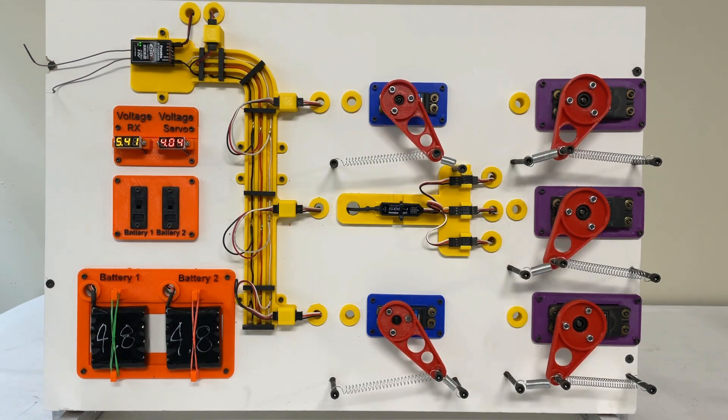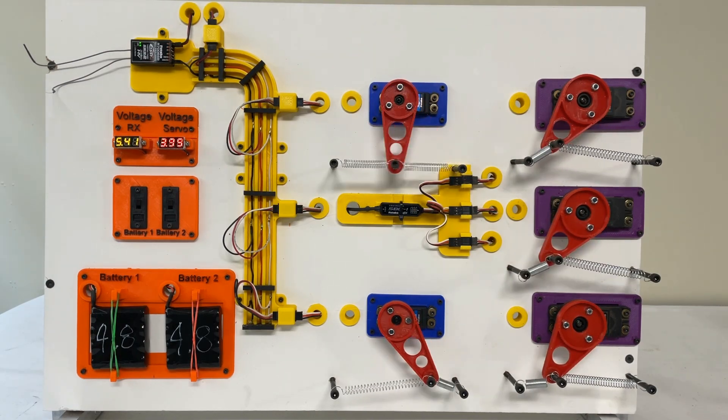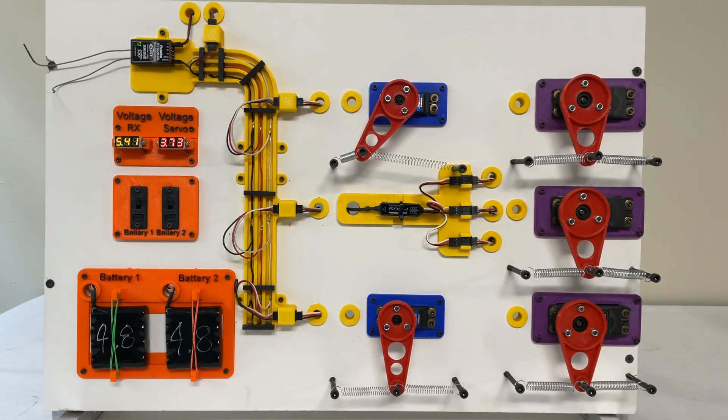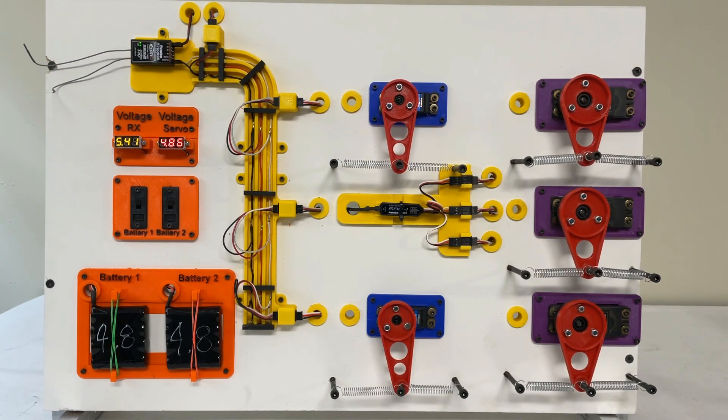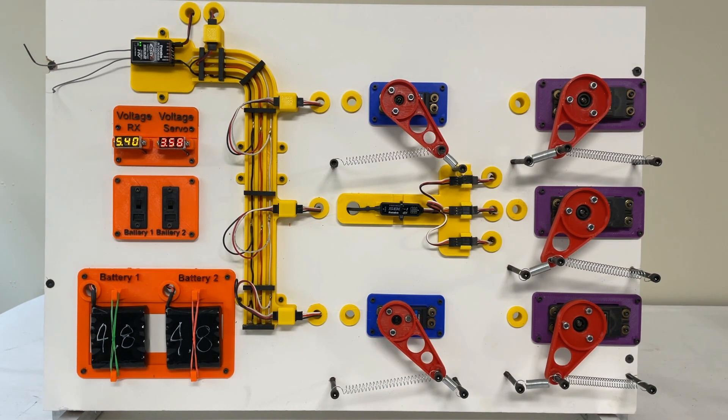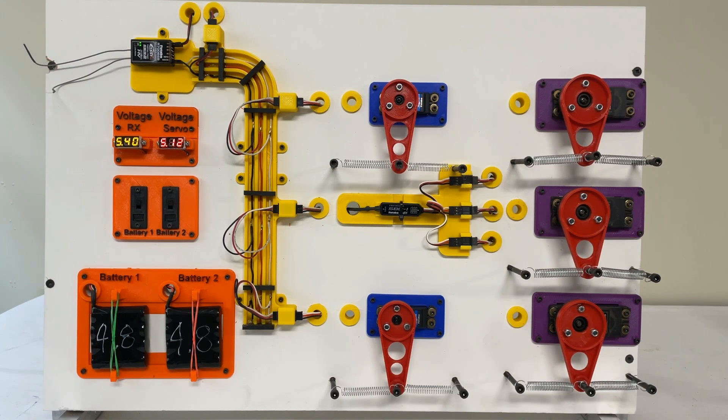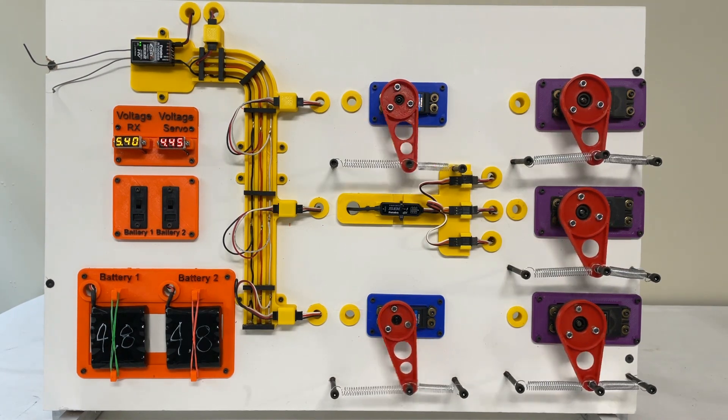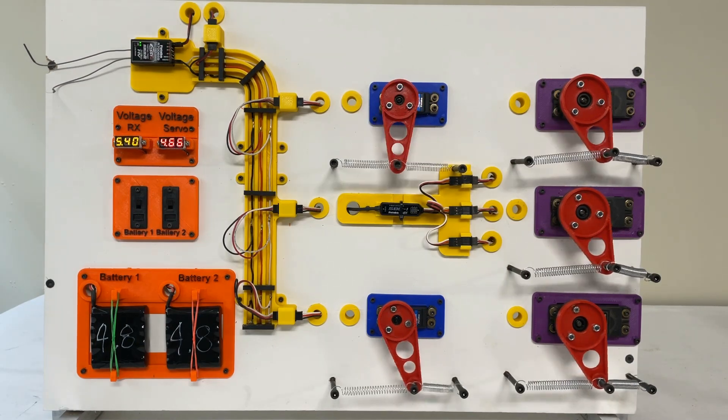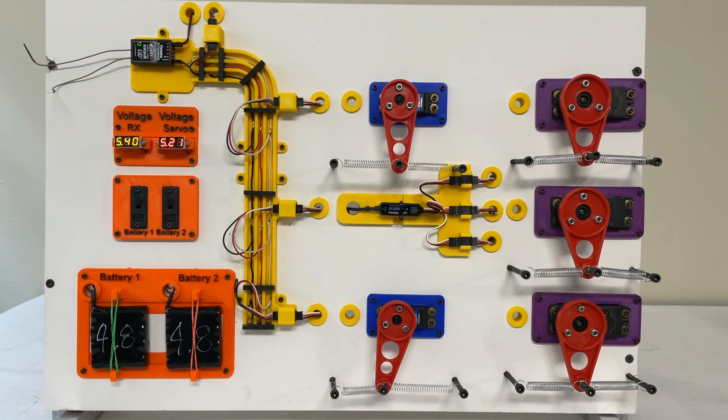Now another thing I want you to think about is these are two fully charged batteries. If you've flown 10 or 12 flights in a day, or four or five flights in a day, and your voltage is already starting to get down on your receiver pack, and you go up and do a Lomcevak or you start doing a harrier, or you're doing a rolling 360 and you're really hammering the servos, are you pulling your voltage down?